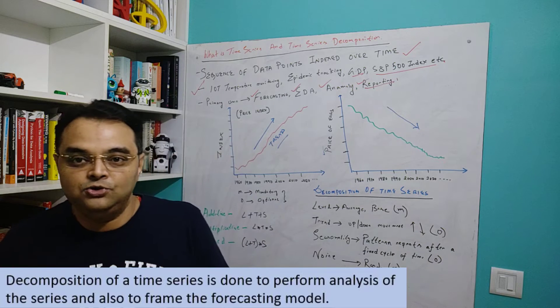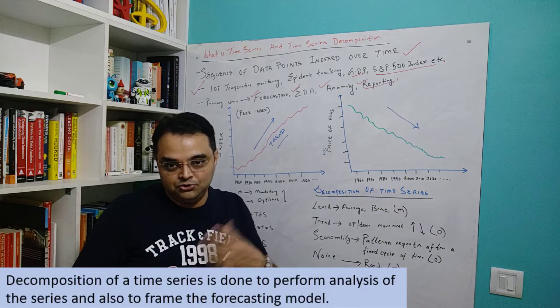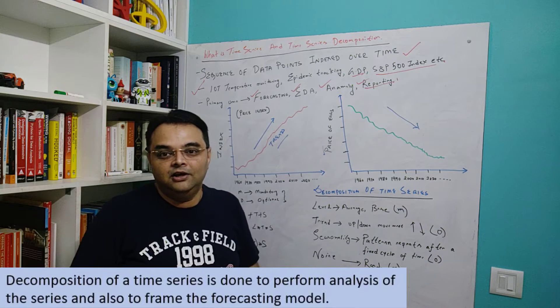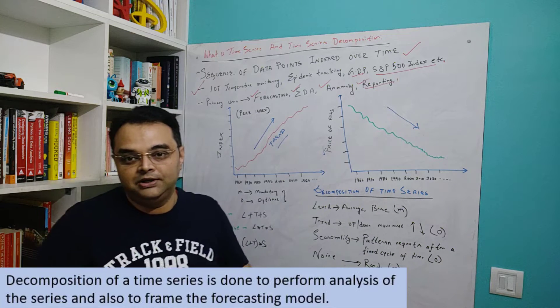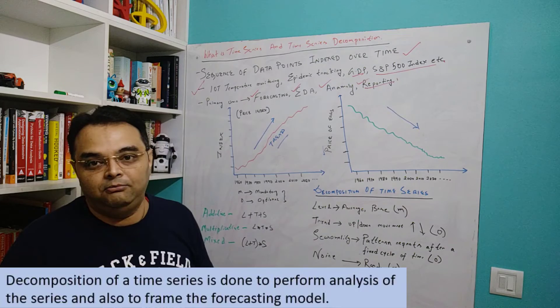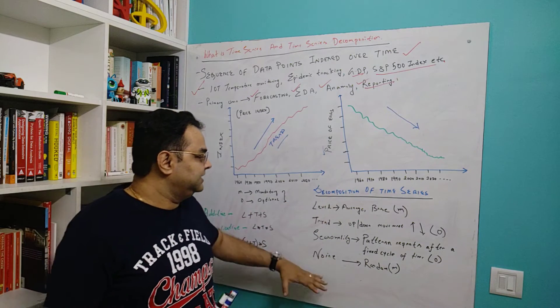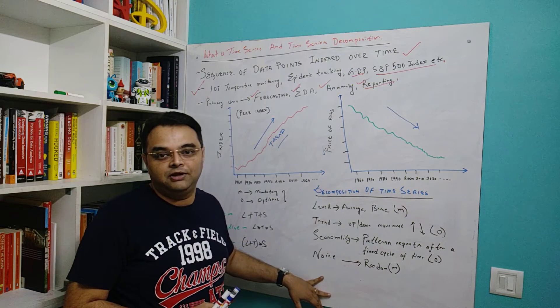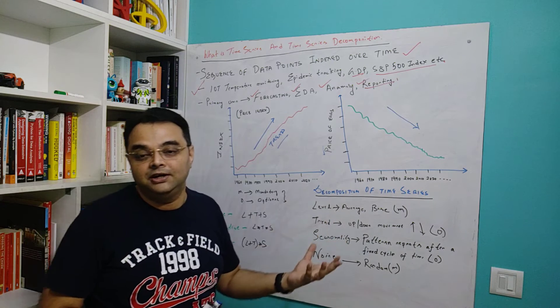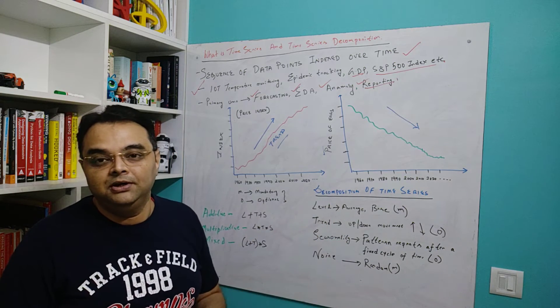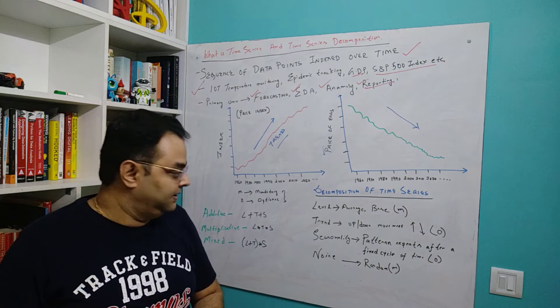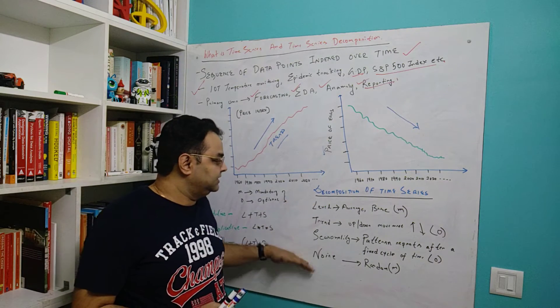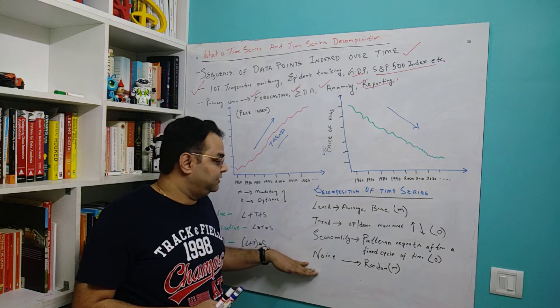What we do essentially in time series forecasting is we try to find the components of the time series, try to understand it, try to do some kind of fitment. Once we have dissected the data, we do the forecast by pulling those components again into our model. That's the reason we do the decomposition of time series - to understand the original data points better and then use them in our favor by forecasting when creating a new model.